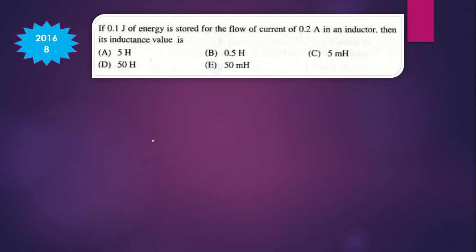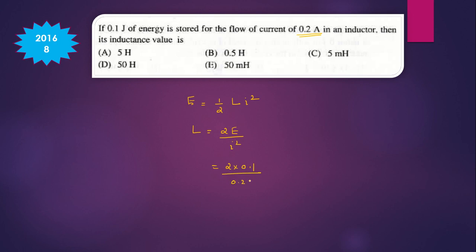Question 8: If 0.1 joule of energy is stored for a flow of current 0.02 ampere, find its inductance value. Using energy stored in an inductance: E = ½LI², we get L = 2E/I². With E = 0.1 J and I = 0.2 A, solving gives the answer as 5 henry.